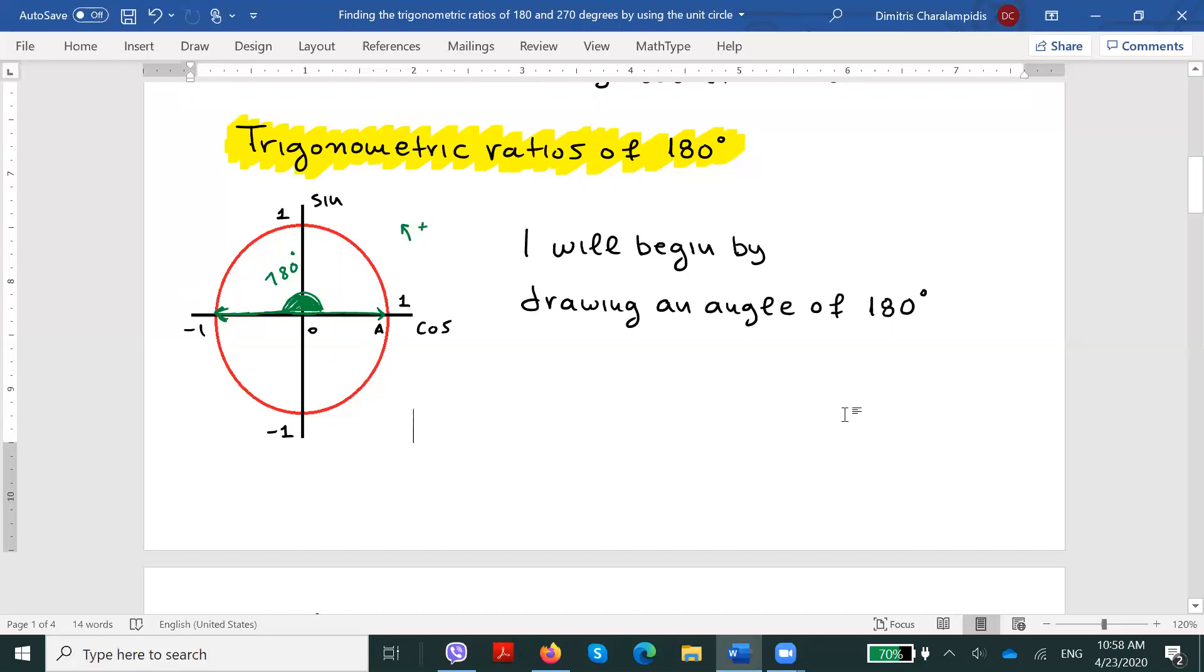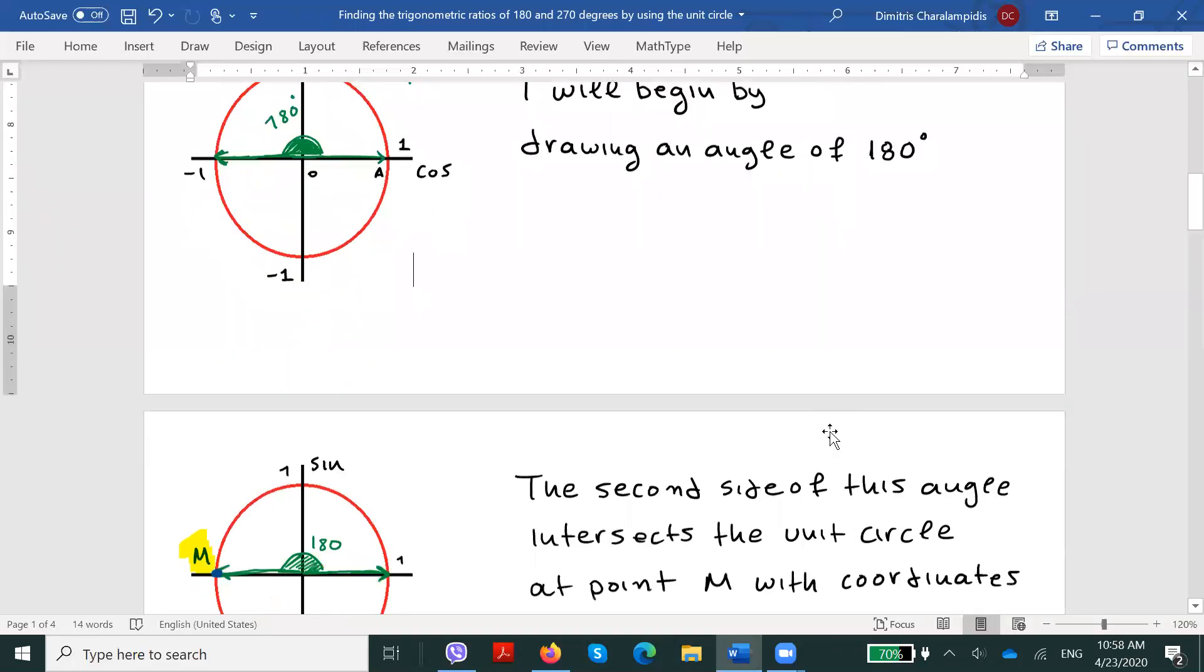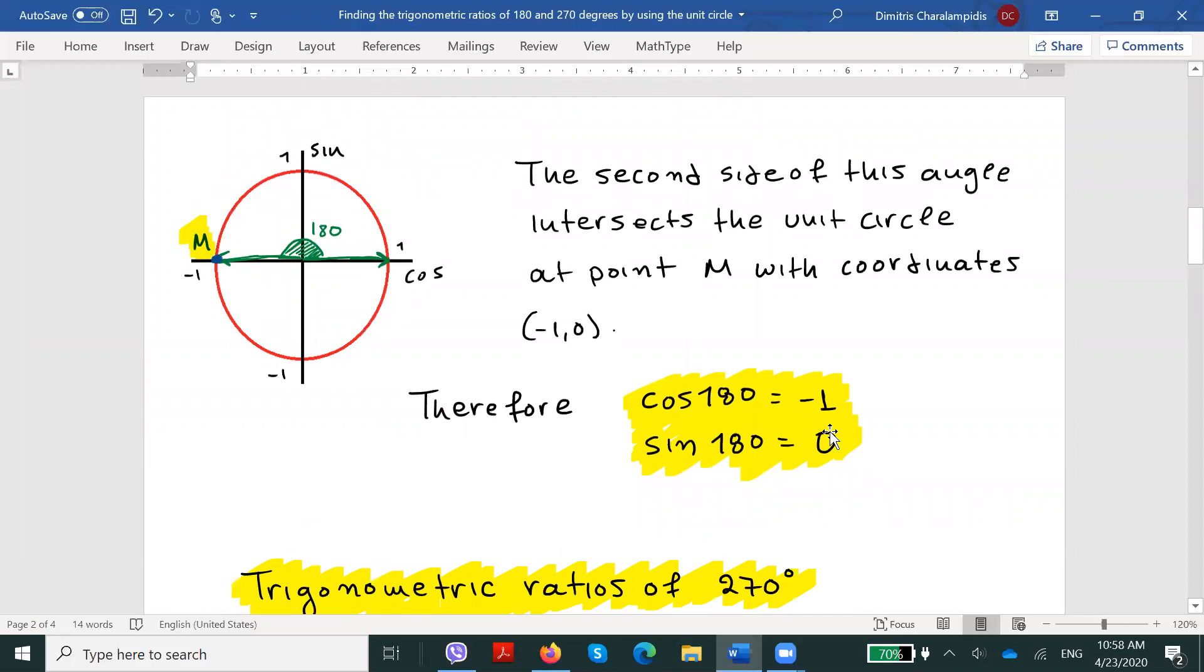From there, we will see where the second side of this angle drawn intersects the unit circle. Let's name this point M. The coordinates of this point will obviously be (-1, 0). The x coordinate will be -1, while the y coordinate will be 0.